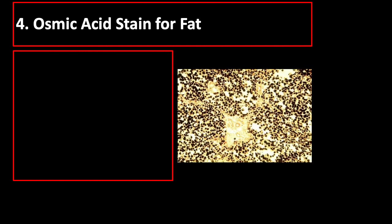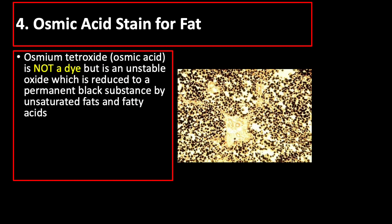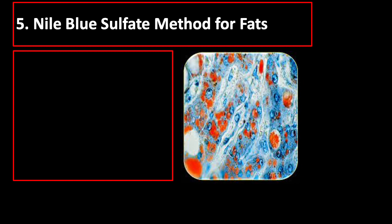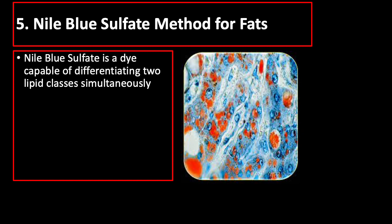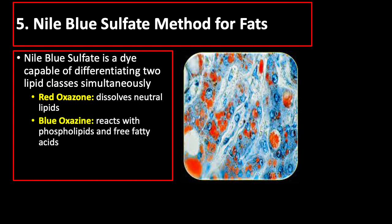The osmic acid stain for fat uses osmium tetroxide, which is not a dye but an unstable oxide reduced to a permanent black substance by unsaturated fats and fatty acids, resulting in black fats and yellow-orange nuclei. The Nile blue sulfate method can differentiate two lipid classes simultaneously by its two components: a red oxazone which dissolves neutral lipids, and a blue oxazine which is basic and reacts with phospholipids and free fatty acids.